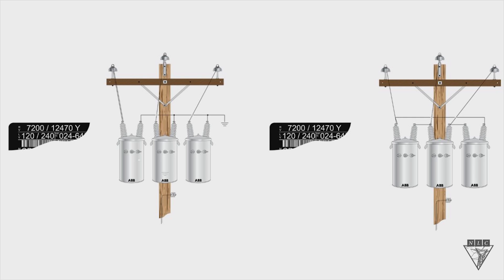Today we're going to talk about the primary connections on a three-phase transformer bank. There are two rules you can use when making these connections: the primary Y connection rule and the primary delta connection rule. On our screen we've got a Y connection on the left-hand side and a delta connection on the right-hand side.